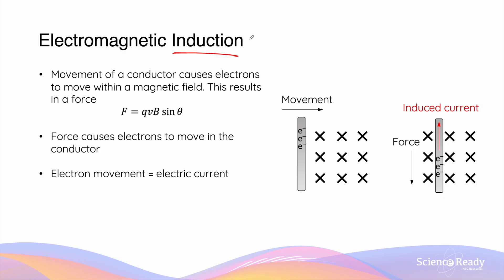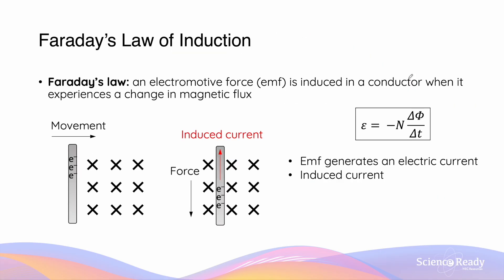The word induction refers to the fact that we have produced current by simply moving a conductor within a magnetic field. Faraday's law of induction states that an electromotive force — EMF for short — is induced in the conductor when the conductor experiences a change in magnetic flux. In the previous example, when the rod containing electrons is moved towards the uniform magnetic field, it will experience an increase in flux because a greater area of the conductor will be within the field. According to Faraday, when this conductor experiences any type of change in flux, including an increase in flux, there will be an EMF — which is also voltage — induced within the conductor, and this voltage will cause a current to be produced.